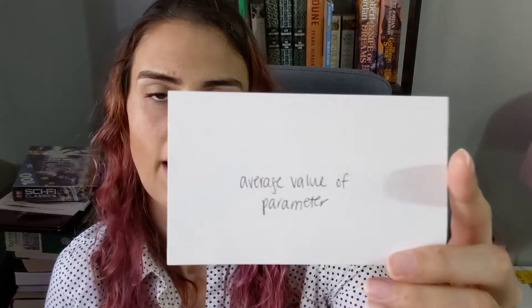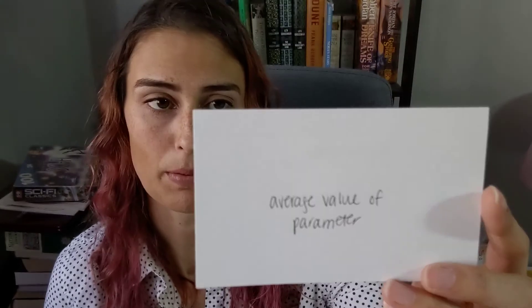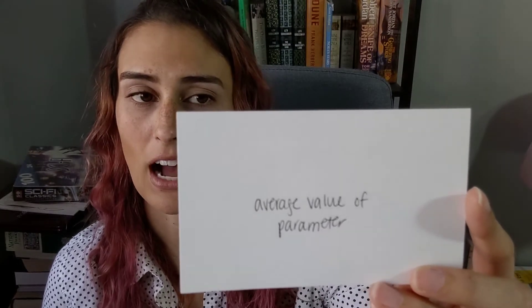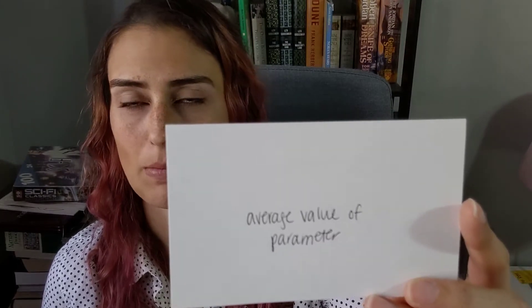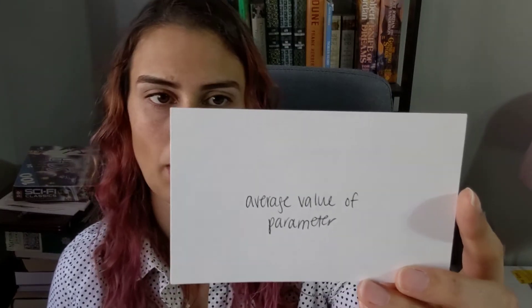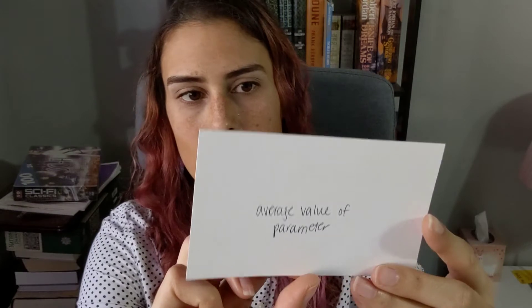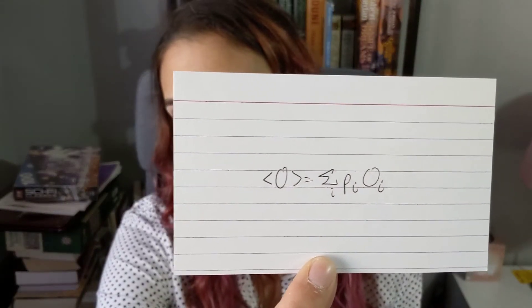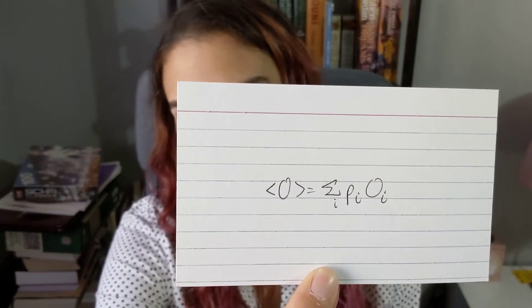The average value of a parameter is equal to the sum over i of P sub i times O sub i, where P sub i is the probability of being in state i.